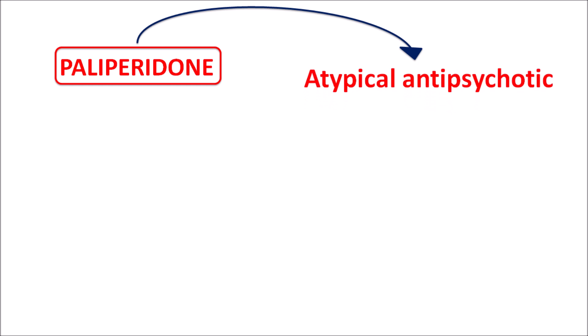Today we are going to discuss paliperidone. This drug belongs to atypical antipsychotics — it is a second generation antipsychotic with more pronounced antagonism on 5-HT2A receptors rather than dopamine D2 receptors, which is why it is classified as an atypical antipsychotic.